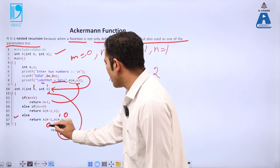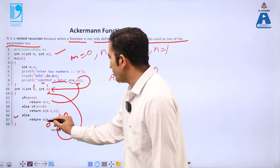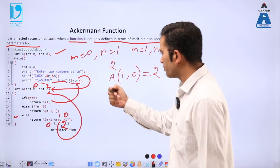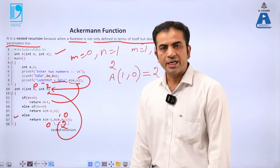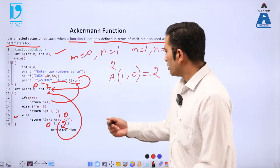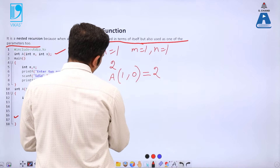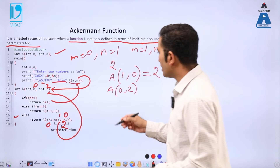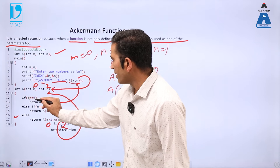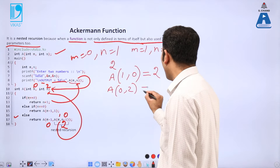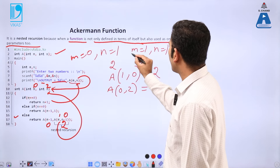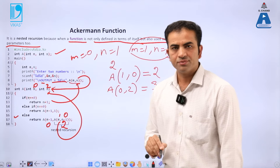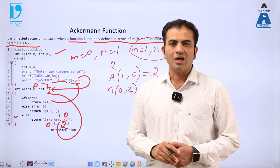The expression becomes A(0, 2). Another recursive call is made with M equals 0 and N equals 2. Since M equals 0, the output is N plus 1, which is 3. So when the input is M equals 1 and N equals 1, the Ackermann function output is 3.